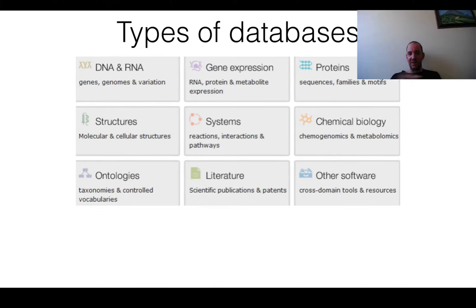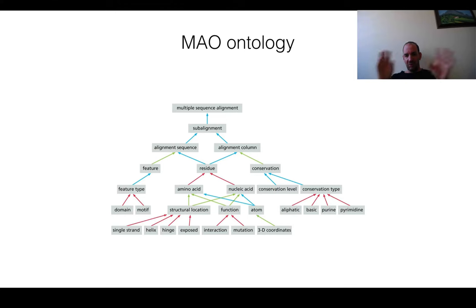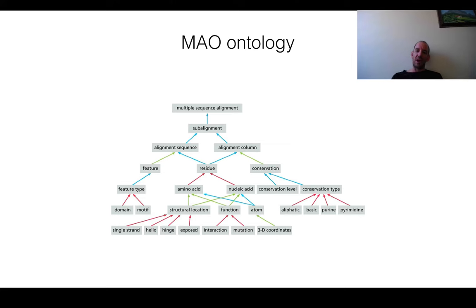There are a lot of different databases and they are often accessed from different places. Often you want a way of describing the content of a database — this is called an ontology. For example, a proposed ontology for multiple sequence alignments describes how sequences align together. You have sub-alignments, you can align different sequences and columns, and you have residues, amino acids, structures, etc. An ontology provides a way of describing how different things in the database are related to each other.